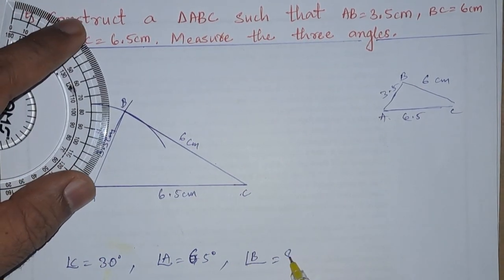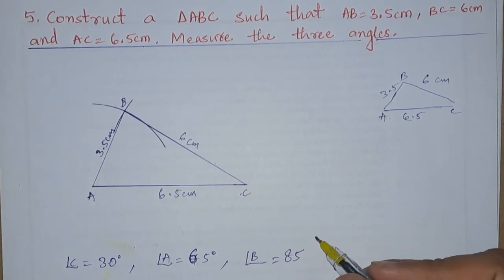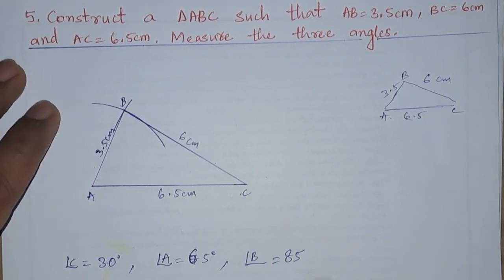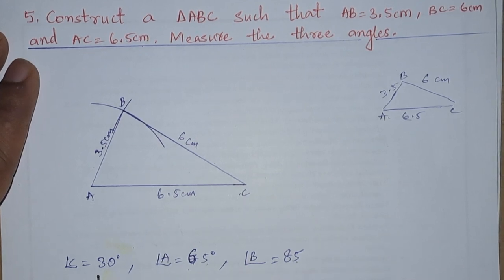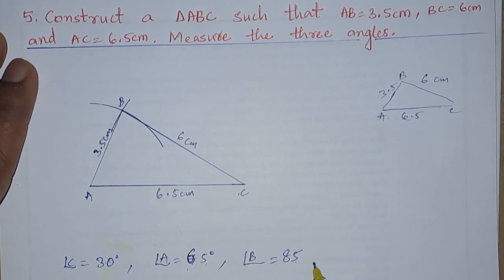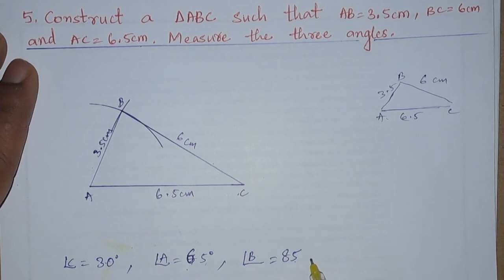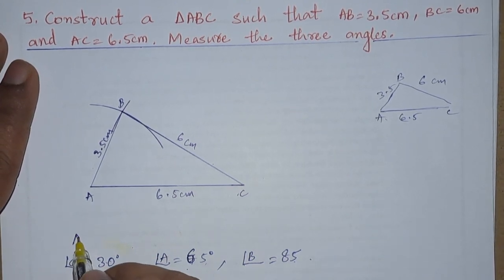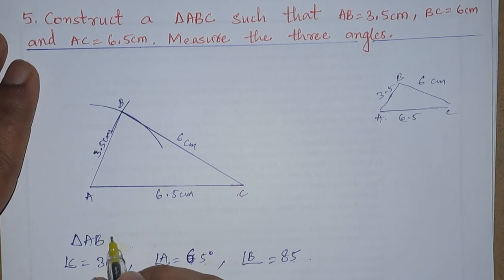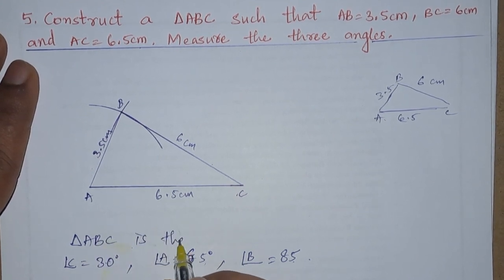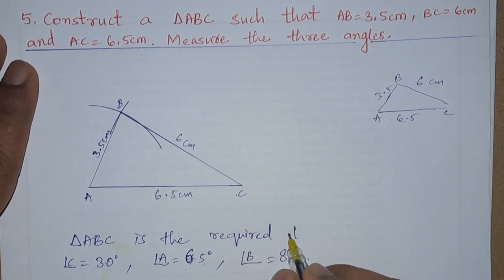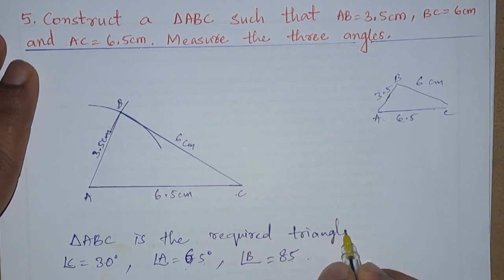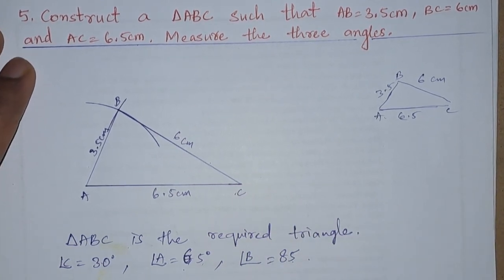So now we need to add and check. If we add this 65 plus 85, we will get 150. 150 plus 30 is 180. Sum of all angles is 180 degrees, so we are getting that. And we can write therefore triangle ABC is the required triangle and the measure of the angles are below.